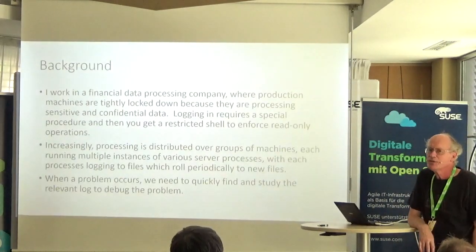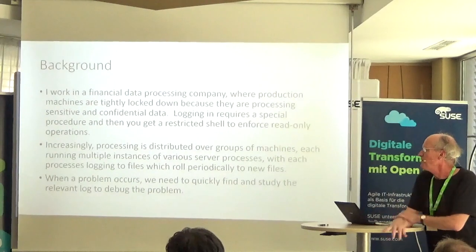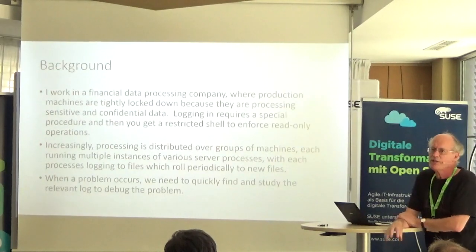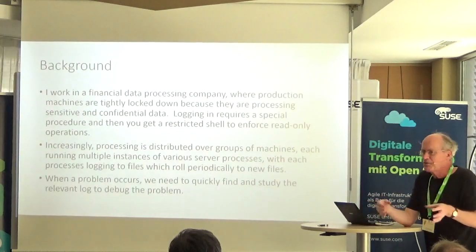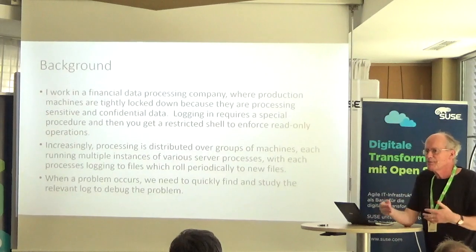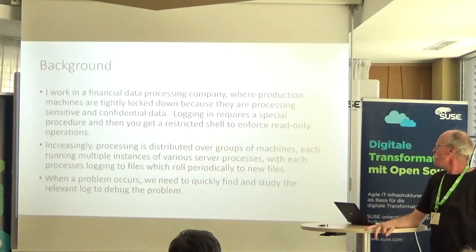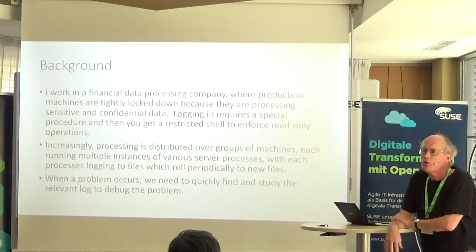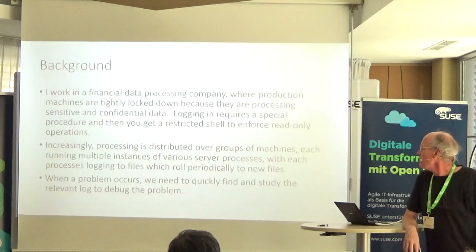That can be a bit of a job to find because we now have lots of different server processes, and each one of those typically runs distributed across maybe half a dozen machines, and each machine might be running 10 or 20 instances of that process. These processes are logging to files that every so often roll, either because of a time limit or because they've reached a size limit. So when you get a notification of a problem, you don't necessarily know where the transaction that's gone wrong was processed.